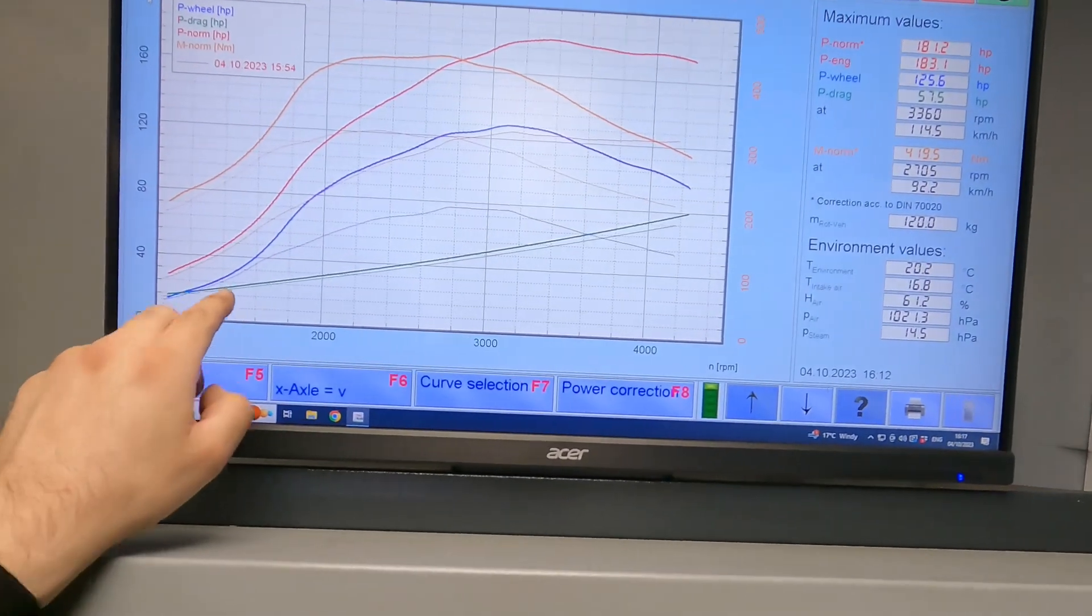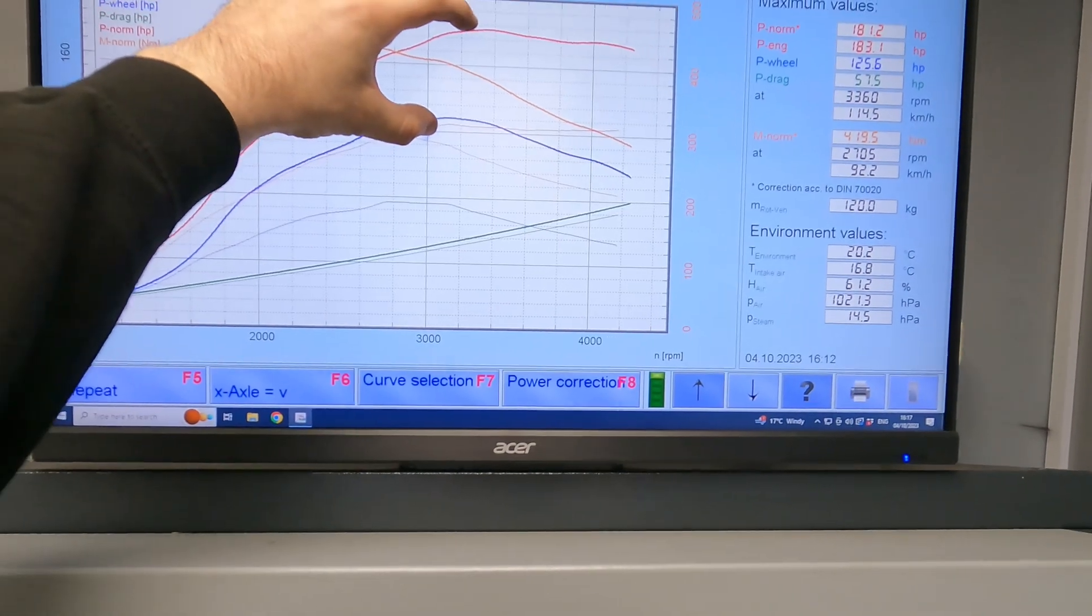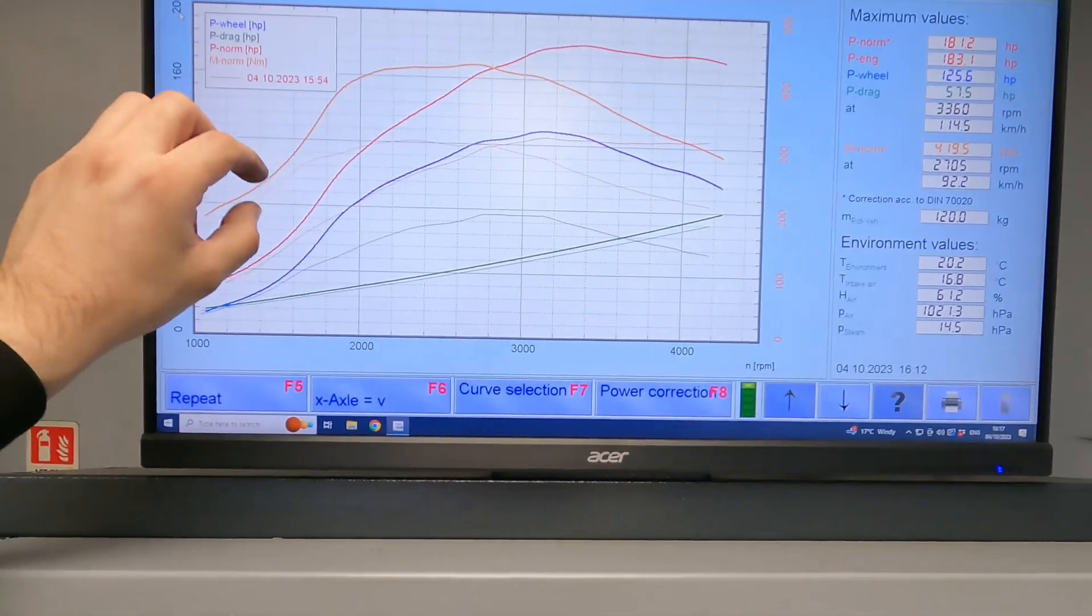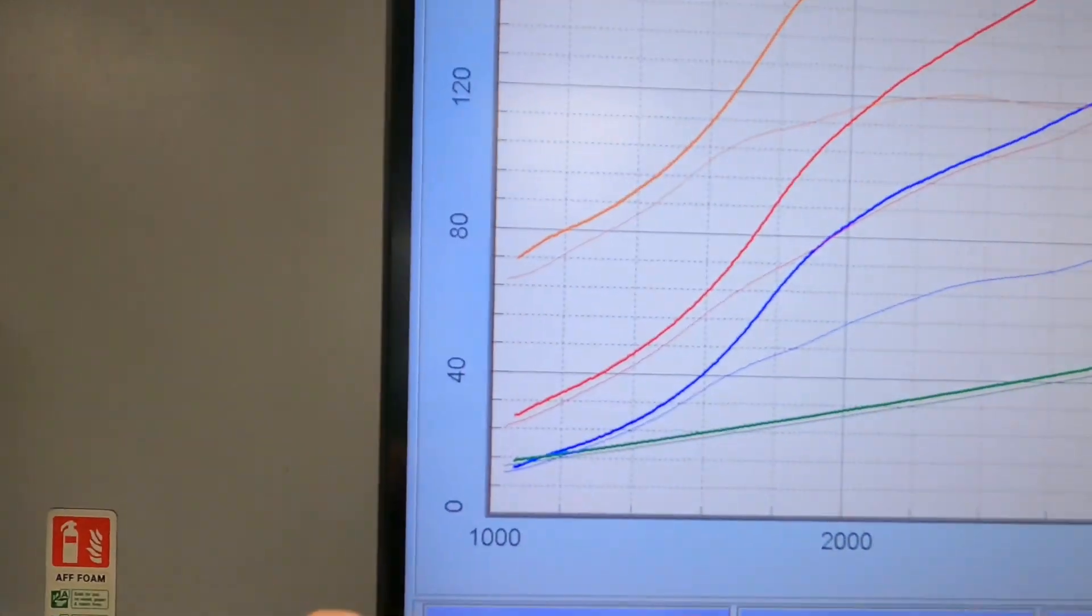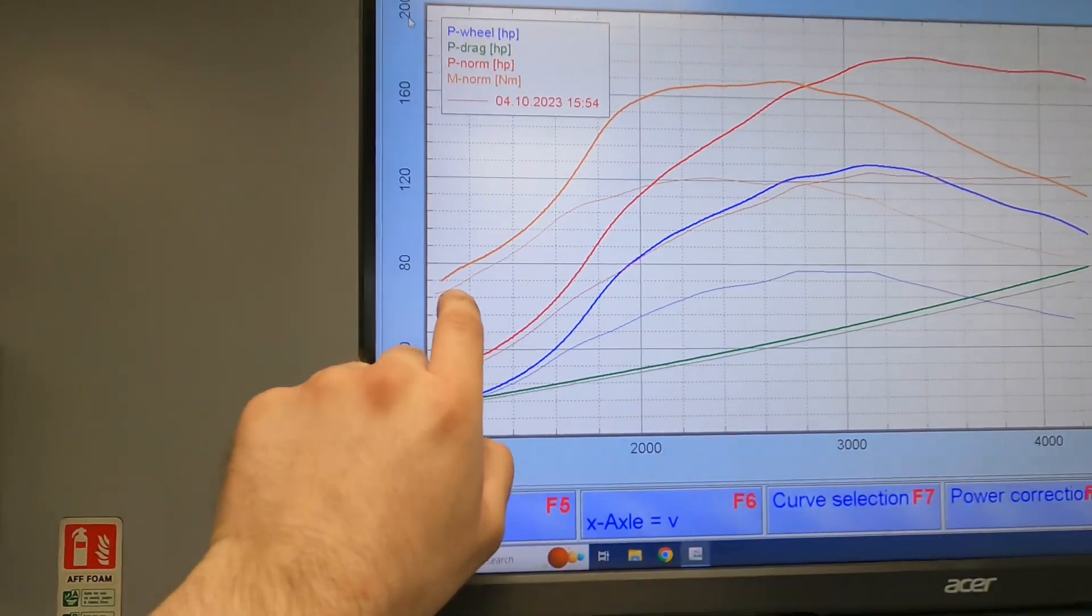And here, where we are now, horsepower - so much, a huge improvement. And also the torque. And the gains start off right at the beginning of the rev range, so from the word go.